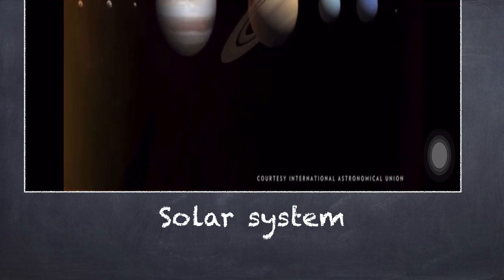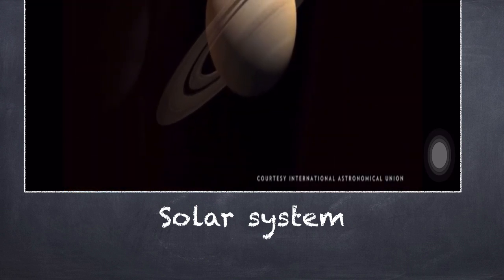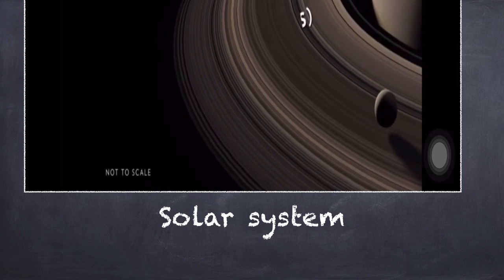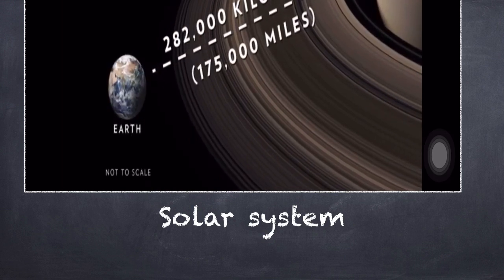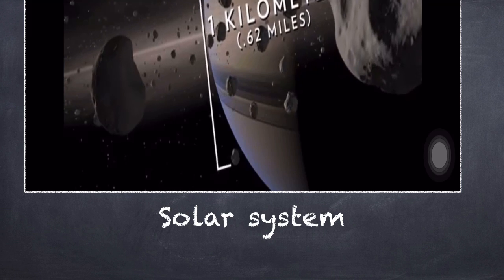Nearby is Saturn, the solar system's second largest planet. Its signature rings are wide enough to fit between Earth and the moon but are barely a kilometer thick.